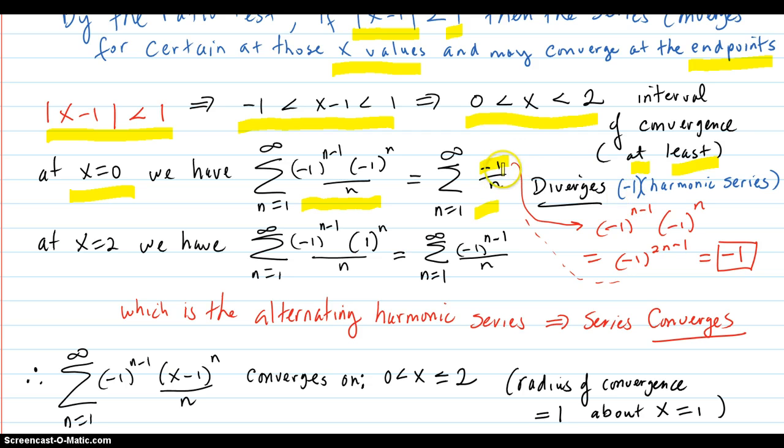If you're wondering why it became negative 1, these are the same bases, and minus 1 plus n is 2n minus 1, which is an odd number, so that comes out to be negative 1. And so that series diverges. So 0 is no good.